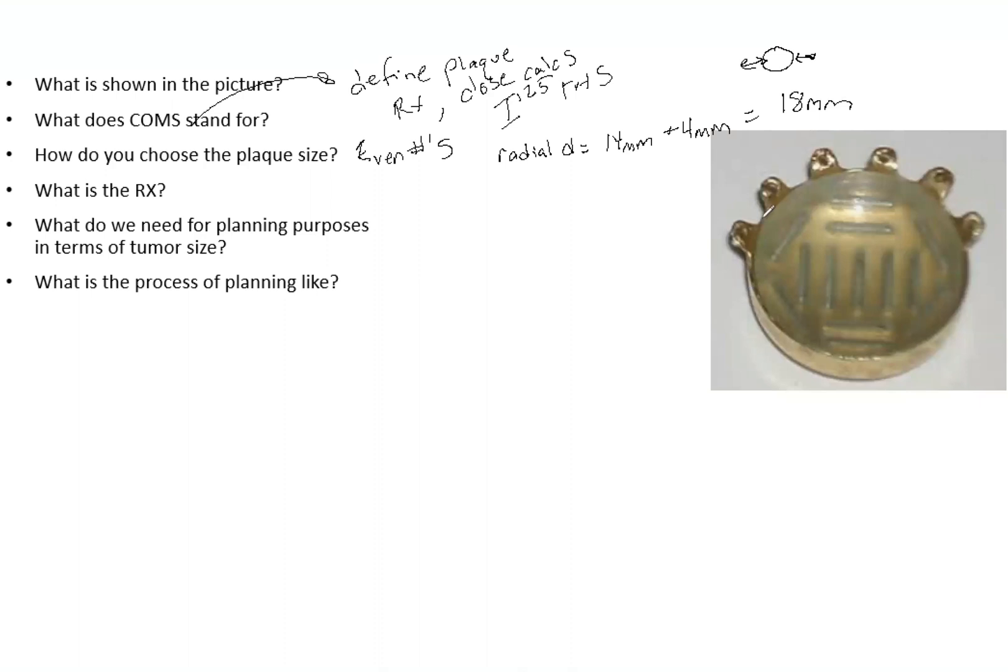If you don't do eye plaques, it's important to not only know this but have some idea of the dimensions. You don't want to say 50 millimeters - obviously that's way too big. Having some idea like maybe 18 or 20 millimeters would be a decent plaque size.